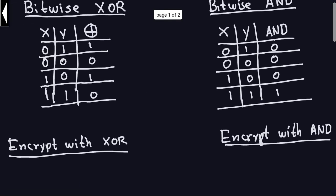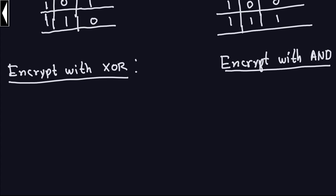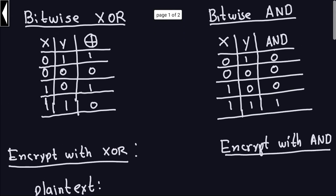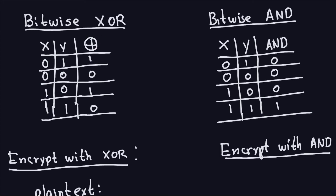Let's start with XOR. Remember, encryption here is done on bits — zeros and ones. So what happens if I want to encrypt a plaintext bit? Let's look at this bit by bit. My plaintext is a zero. Looking at the XOR truth table, if I encrypt a zero, the string S that encrypts the bit can be either a one or a zero, giving me two possibilities.